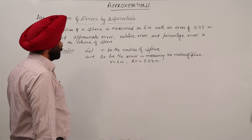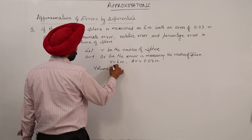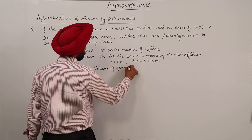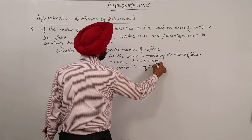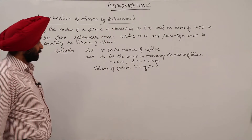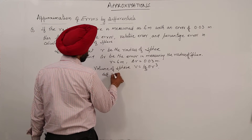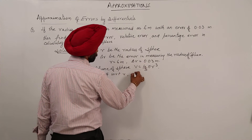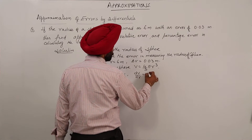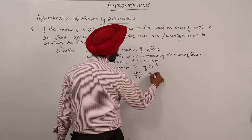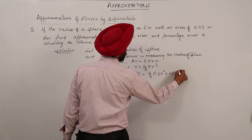First, the volume of a sphere is V = 4/3 π r³. Differentiating with respect to r, we get dV/dr = 4/3 × π × 3r² = 4πr².